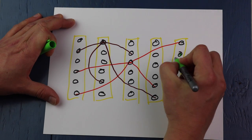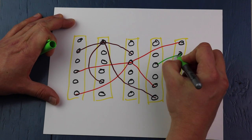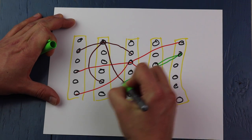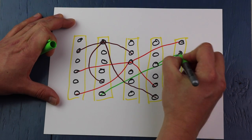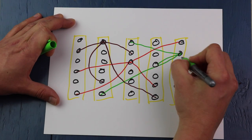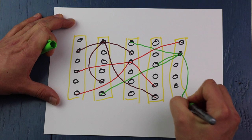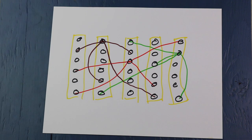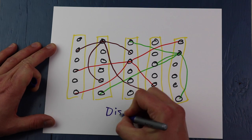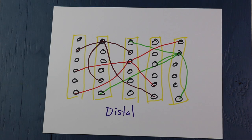We've got one segment per cell, although each cell could have more than one segment. And here's a third cell with another four synapses on its segment. These are distal connections.